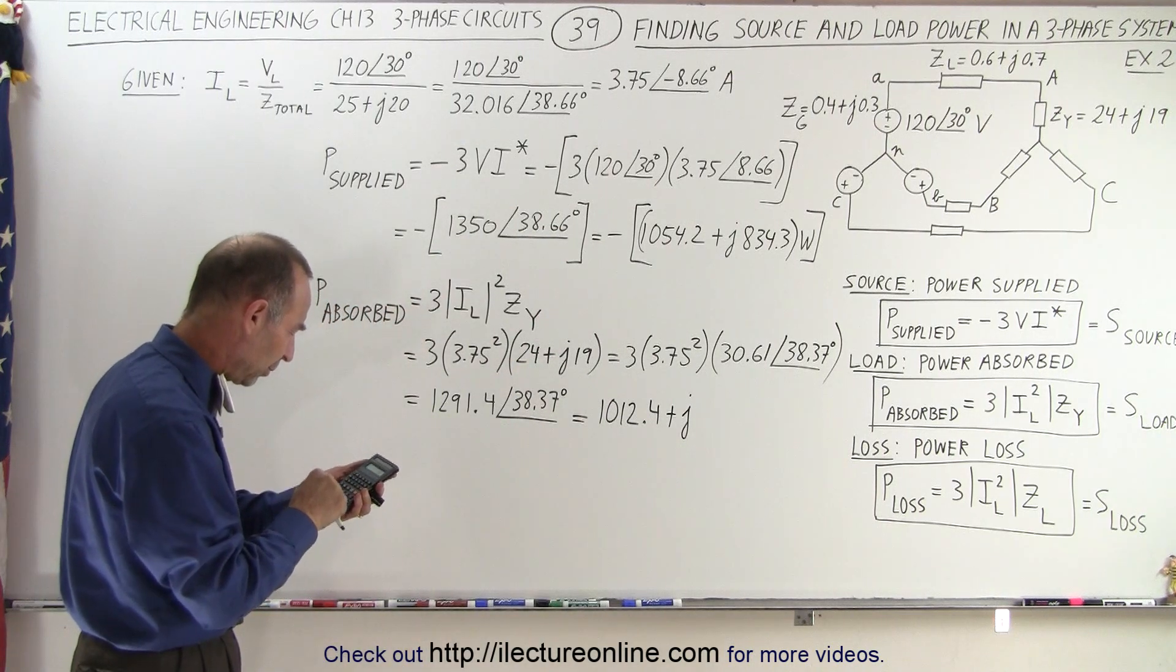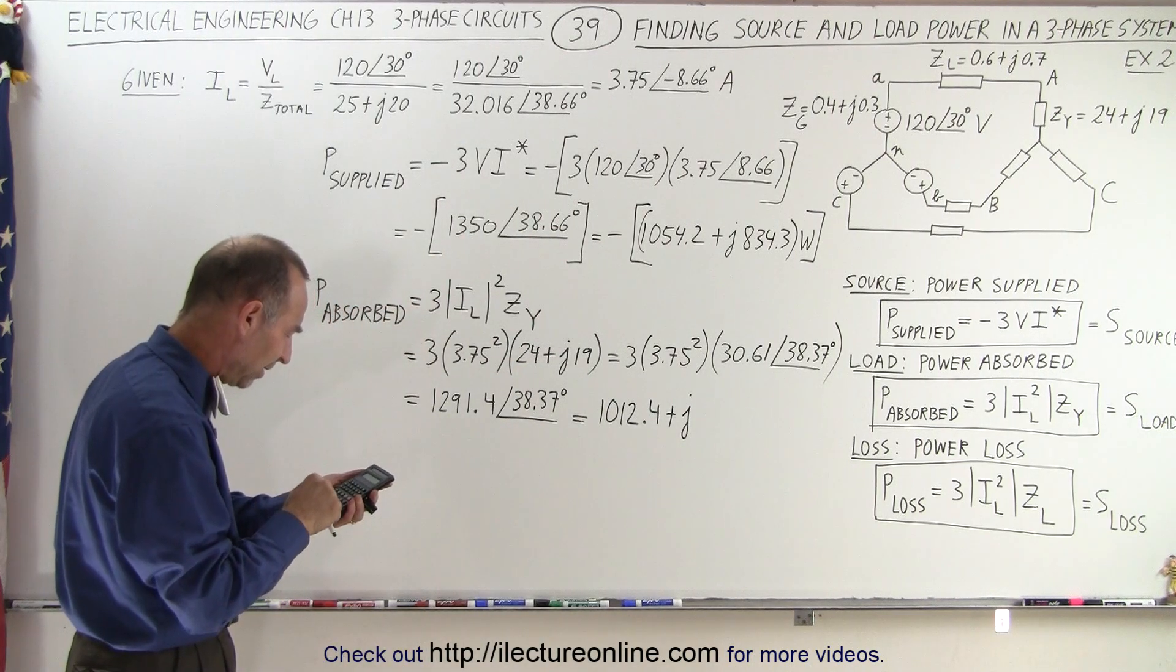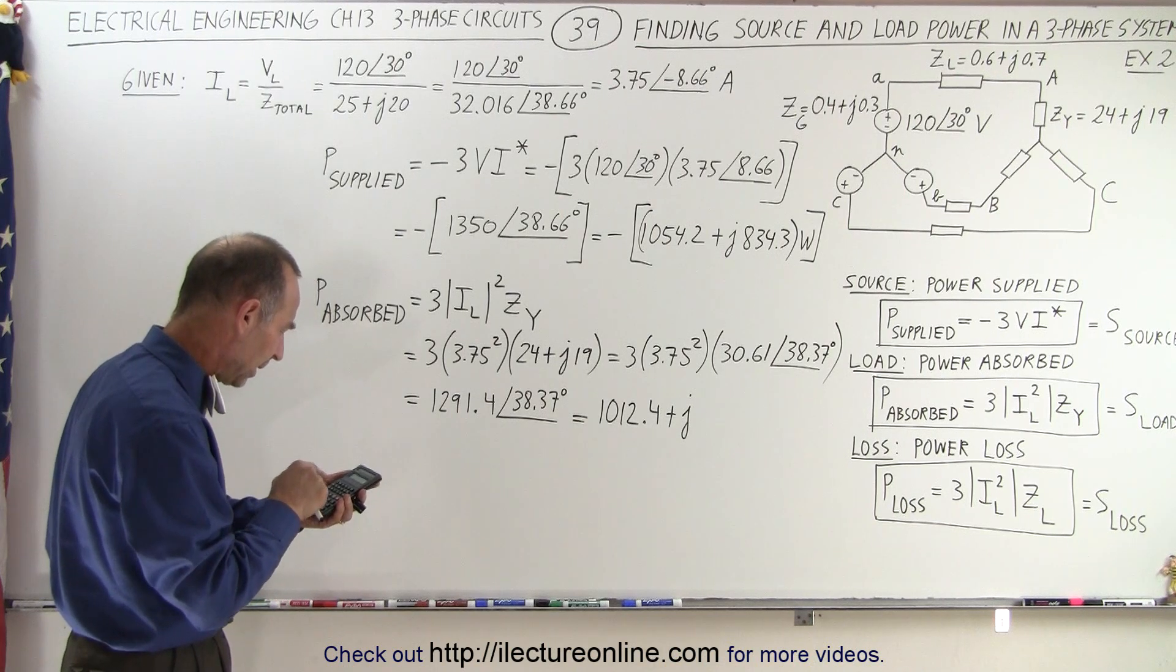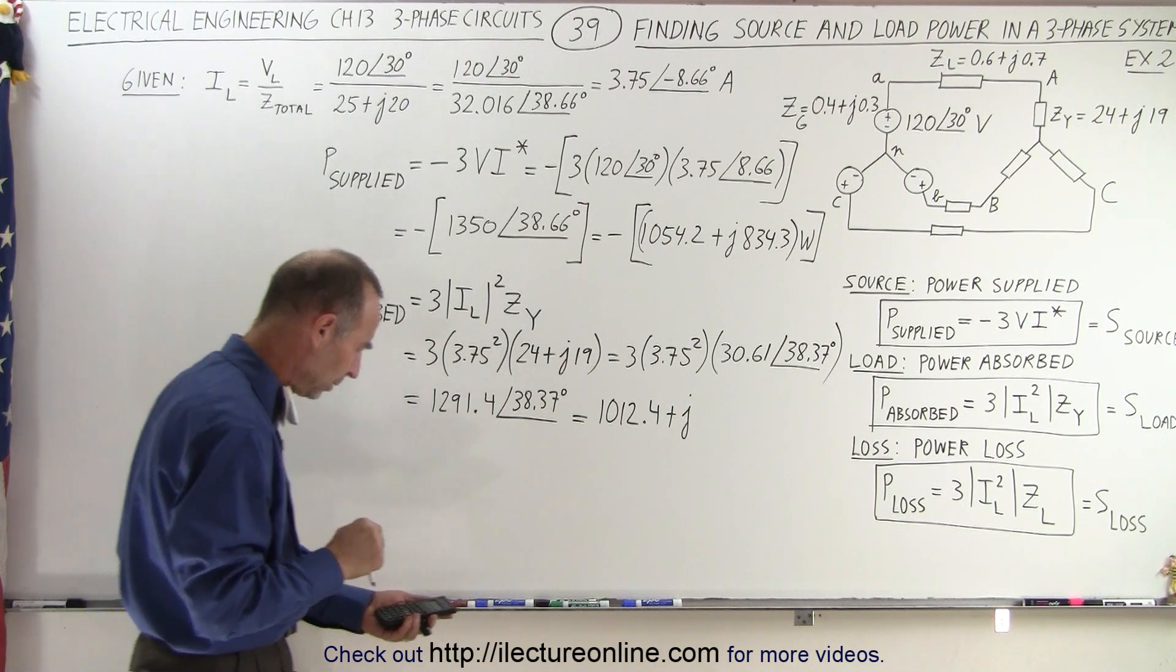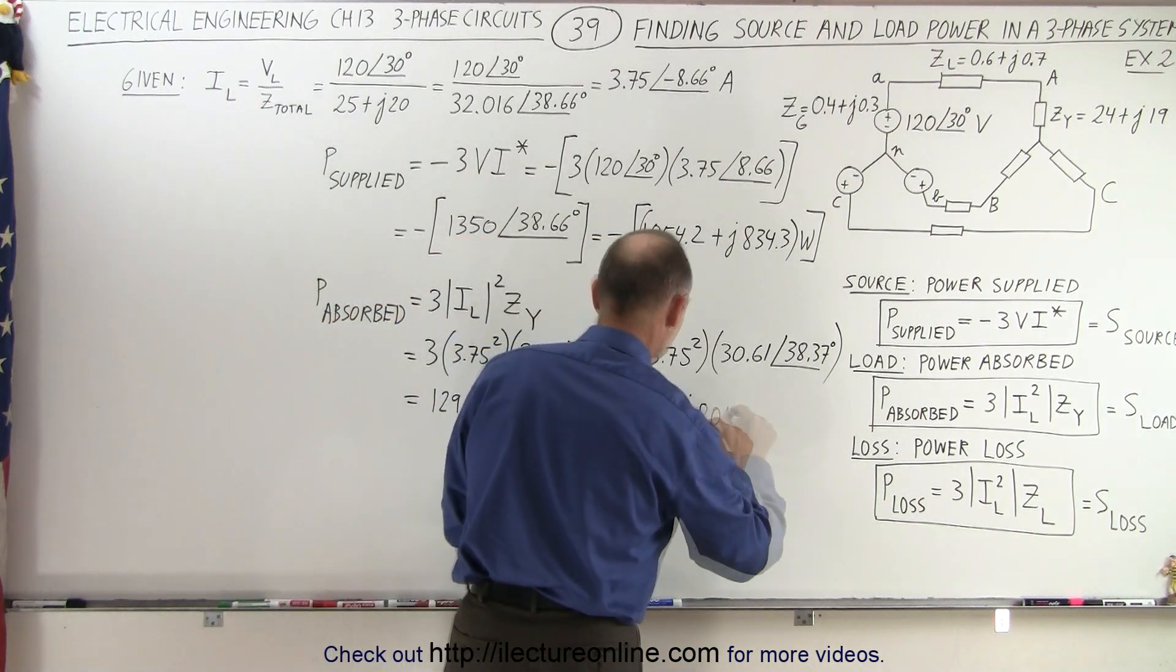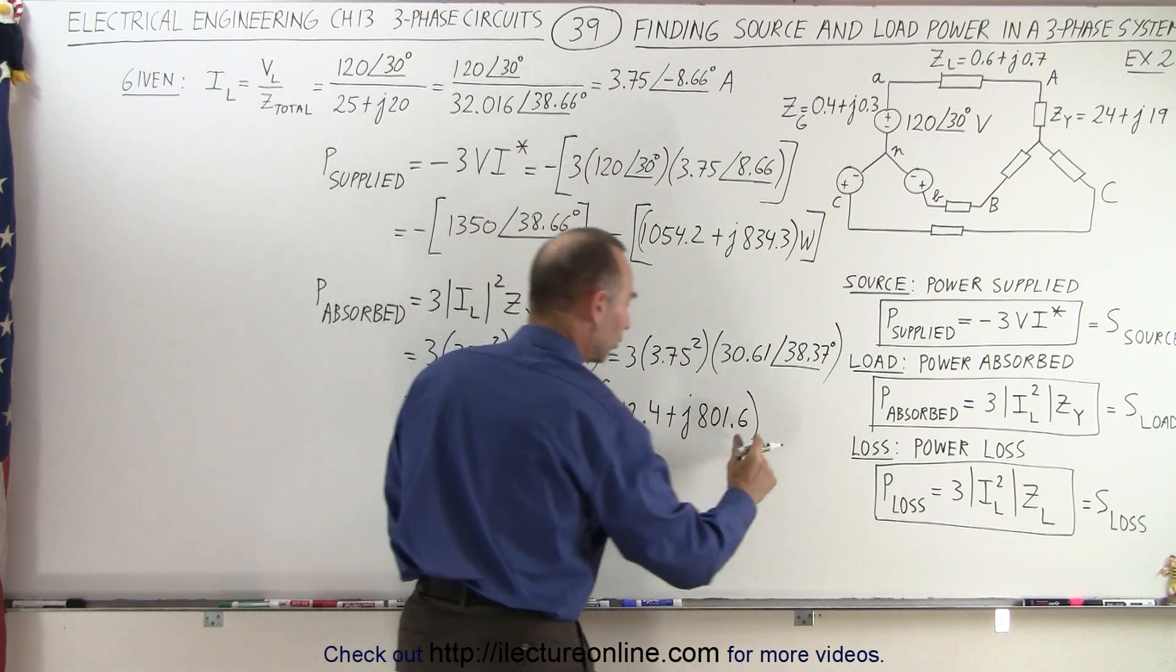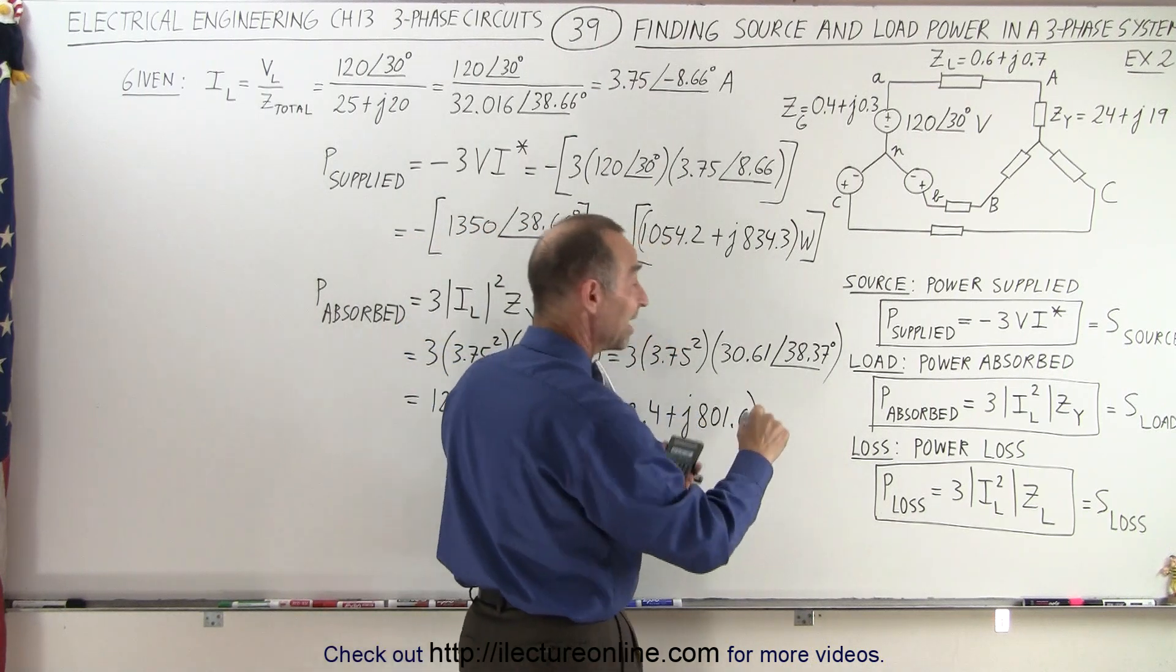So now we have 38.37, take the sine of that, multiply times 1291.4. And that gives us 801.6 positive because it's power absorbed by the load. And that would be in terms of watts as well.